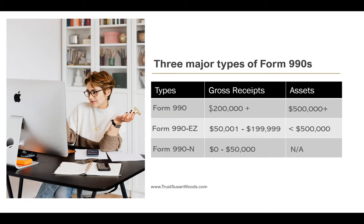You can use this table to determine which type of Form 990 your organization must use. The Form 990 is the standard form for $200,000 or more in gross revenues and $500,000 or more in assets. The Form 990-EZ is for gross receipts between $50,001 and $199,999 with less than $500,000 in assets. The Form 990-N, also called the e-postcard, is used when revenues are between $0 and $50,000 and you don't have many assets.